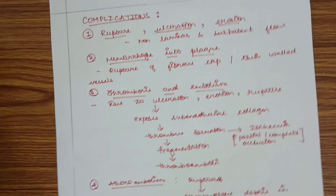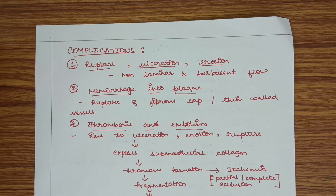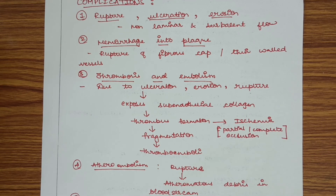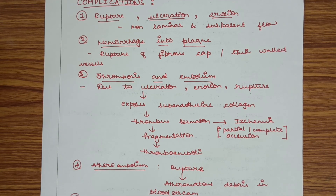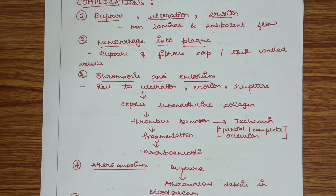Now we look at the complications of atherosclerosis. The first complication is rupture, ulceration, and erosion. Non-laminar turbulent blood flow can lead to rupture, ulceration, or erosion of the plaque. There can also be hemorrhage into the plaque when the fibrous cap ruptures, allowing blood to flow into the plaque.